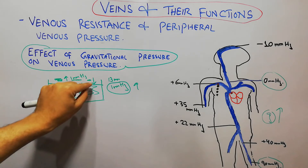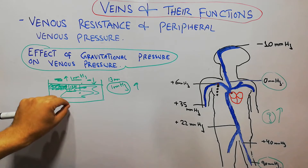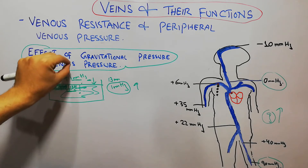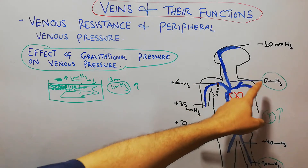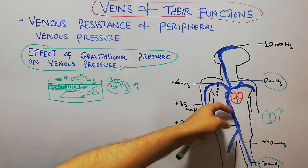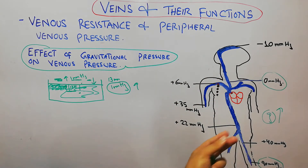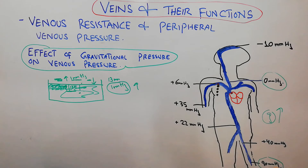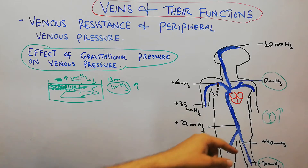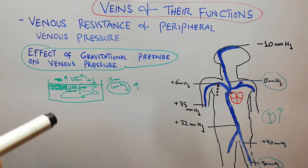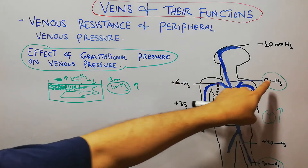Just as the pressure at the surface of the water was atmospheric pressure and deep down it was gravitational or hydrostatic pressure due to the weight of water — similarly, the pressure at the level of the right atrium is 0. But as the column of blood increases deep down, the effect of gravity increases. At the level of the toes, the pressure in the veins is 90 mm of mercury. In between these points, depending upon the distance of the veins, the pressure is between 0 and 90.